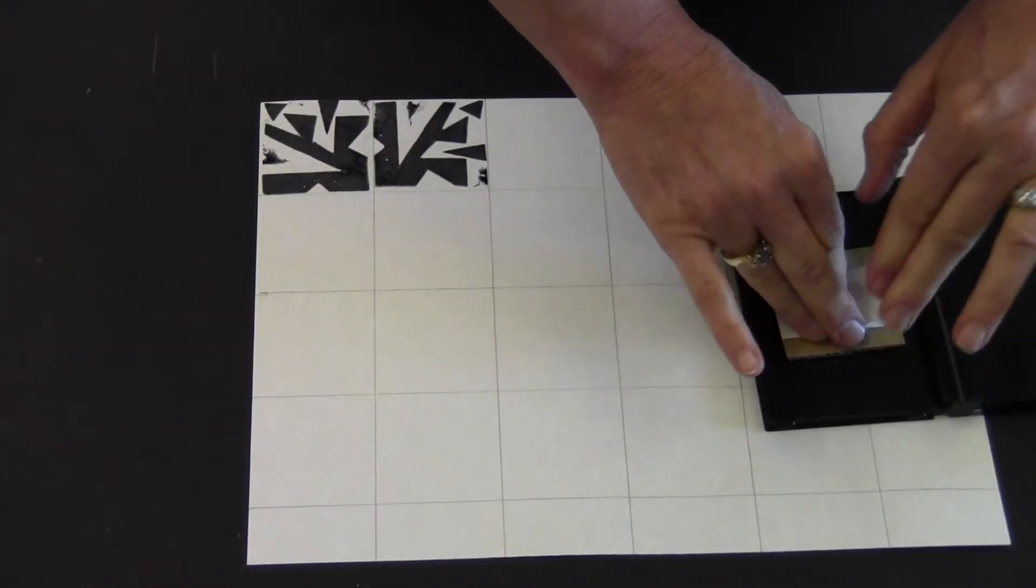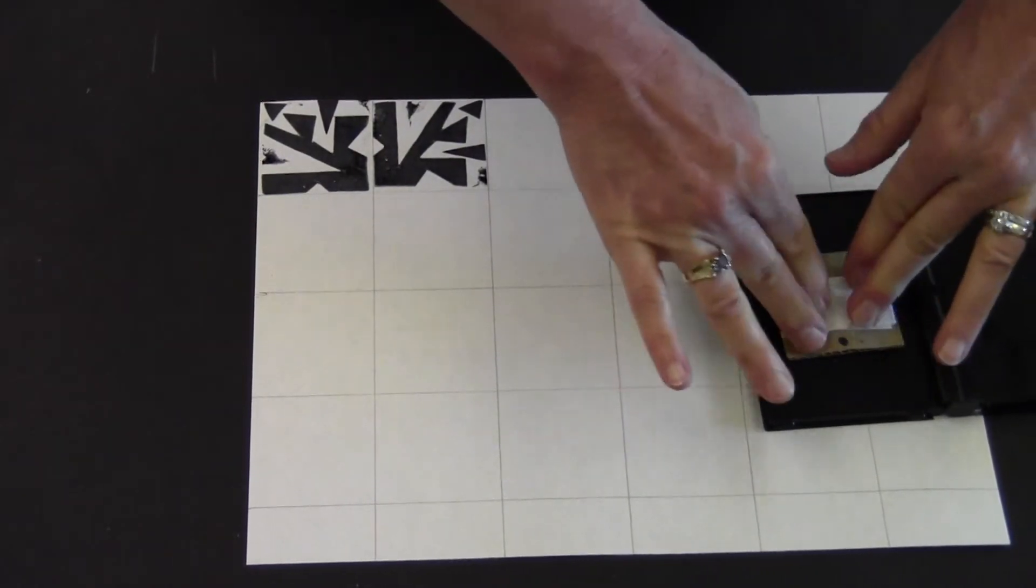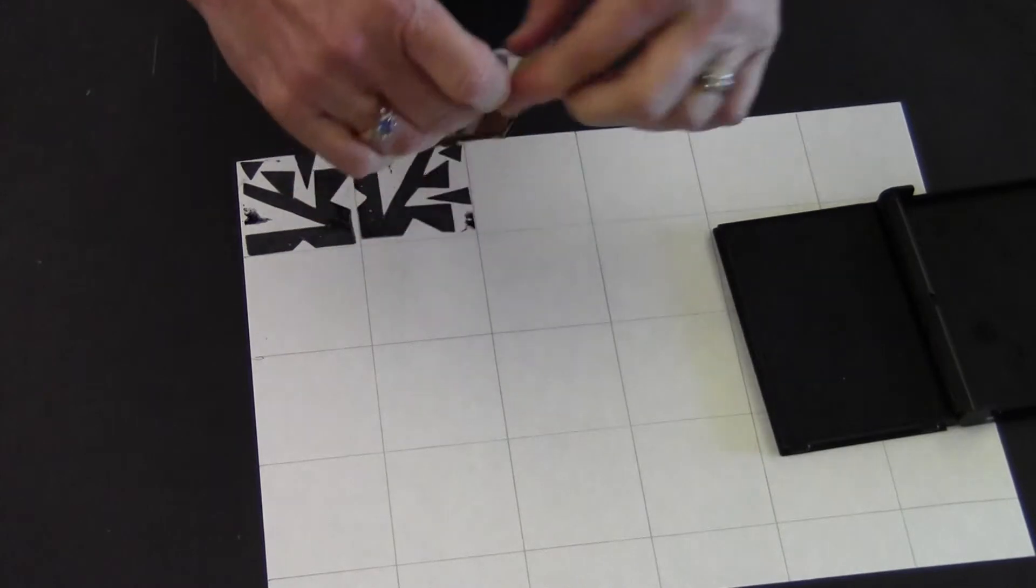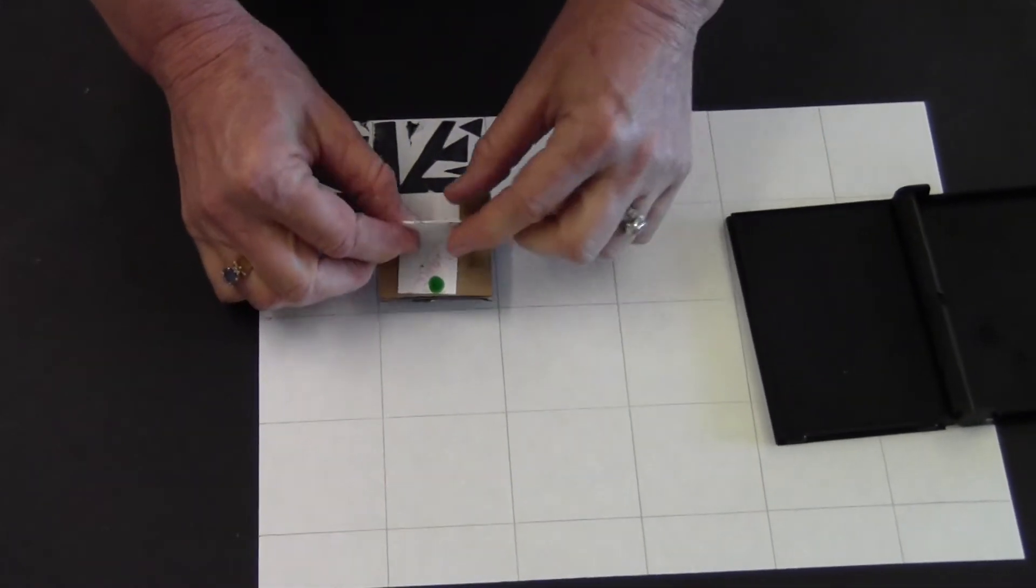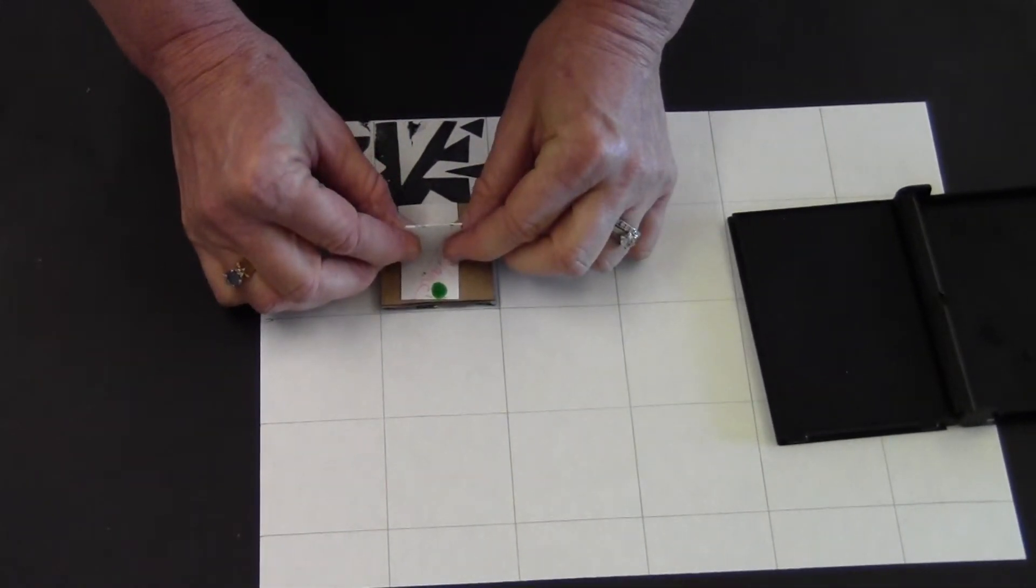One more turn, this time it's facing down. Press, lift up, back to the stamp pad.